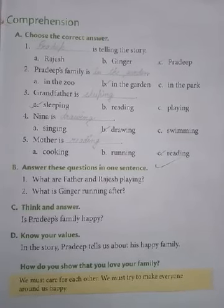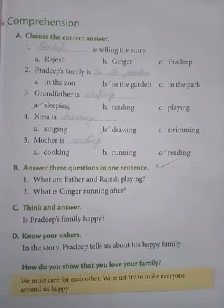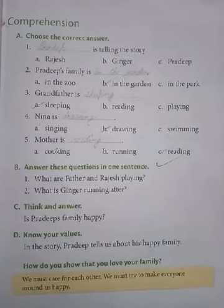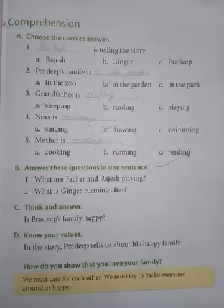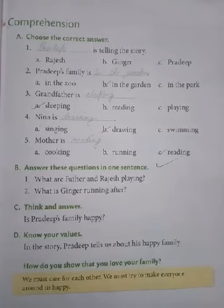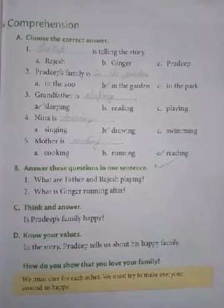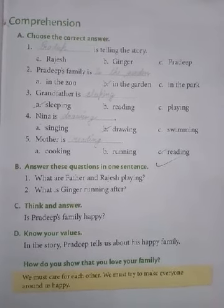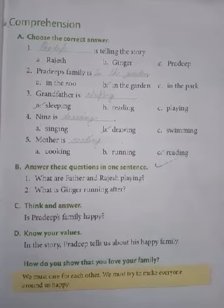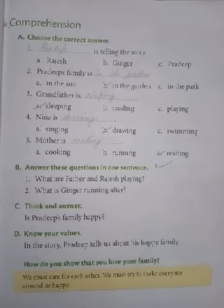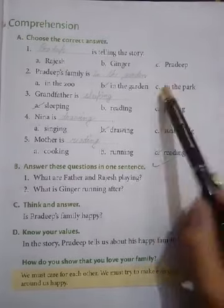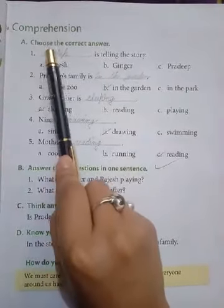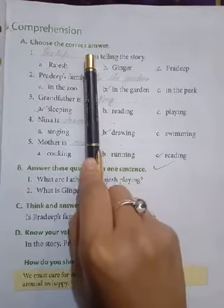Dear students, in this video we will do the exercises of lesson 1 of English Literature. Now come to page number 3. Here in the comprehensive section, you can see A is written: choose the correct answer.